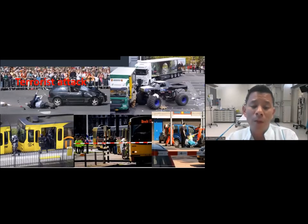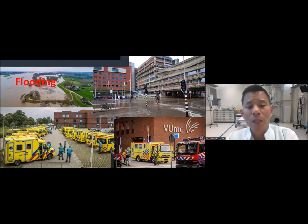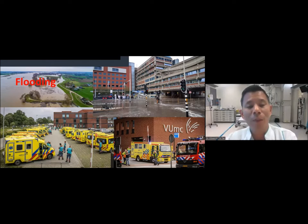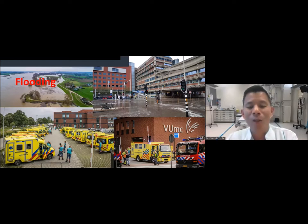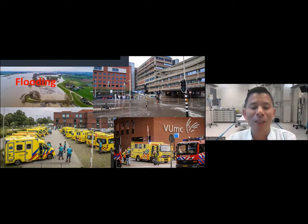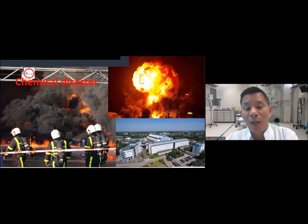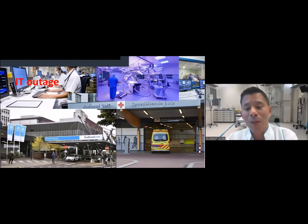We have also had terrorist attacks in the Netherlands. Flooding is another unique risk because some hospitals are built near rivers, and if tides are too high, we must evacuate the hospital — that's a different kind of MASCAL. In Amsterdam, two Level 1 trauma centers had construction-related flooding, and all technical equipment in the basement failed, causing a complete power outage requiring evacuation of nearly 300 patients — a reverse MASCAL. Chemical disasters and IT failures are also concerns; we had one IT outage that forced us to close our ER for several hours.